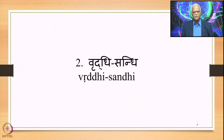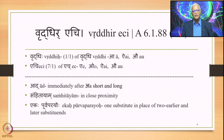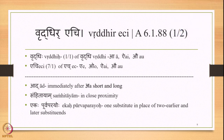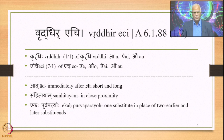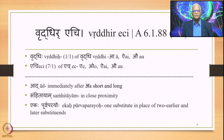Let us now proceed to study Vriddhi Sandhi. The sutra Vriddhi Rechi (6.1.88) contains two words: Vriddhihi (1/1 of Vriddhi), which is defined by Panini in his very first sutra of the Ashtadhyayi — Vriddhiradaich — meaning Vriddhi stands for the three sounds Ā, Ai, and Au. Echi is 7/1 of Ech, which is a Pratyahara.